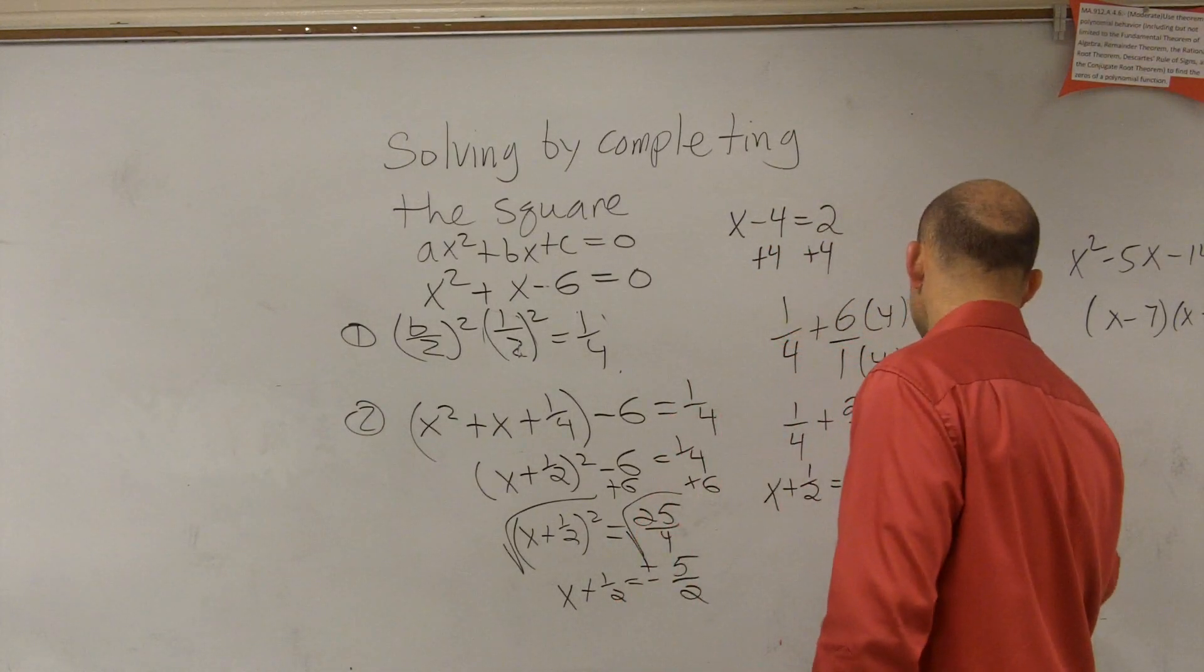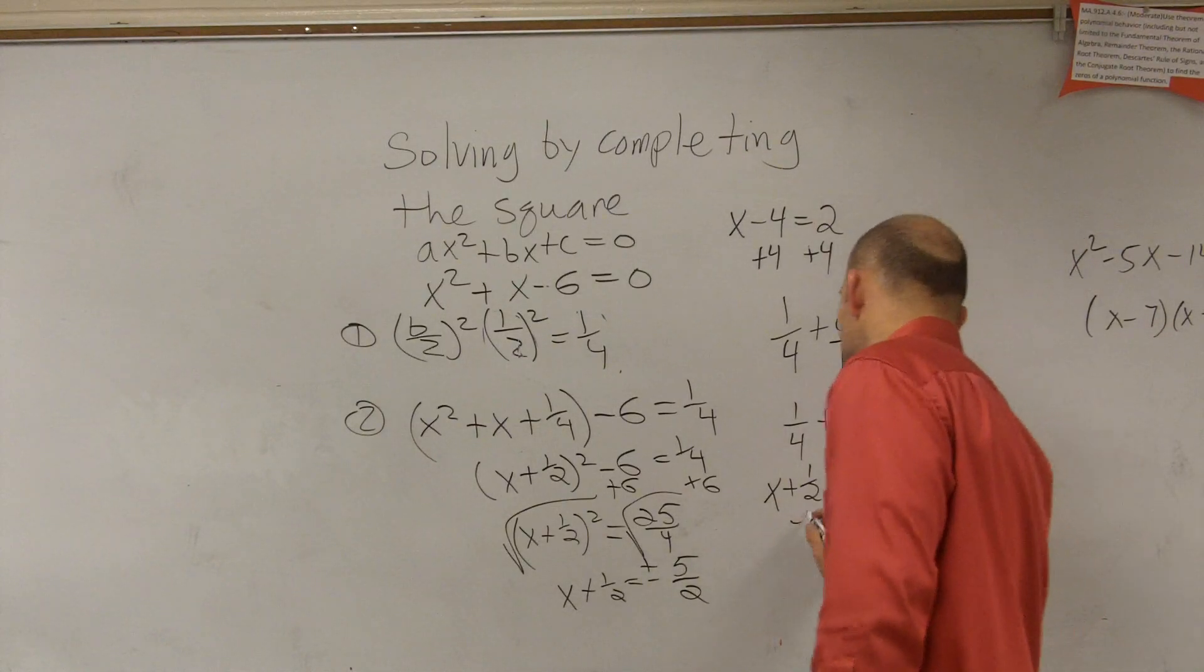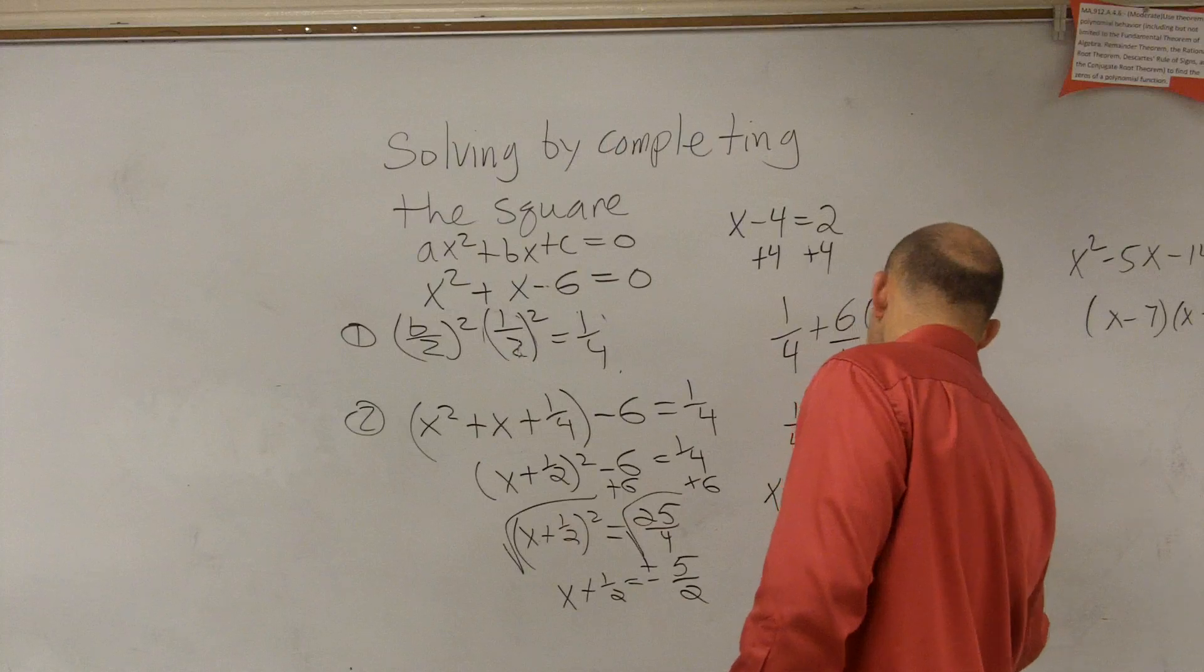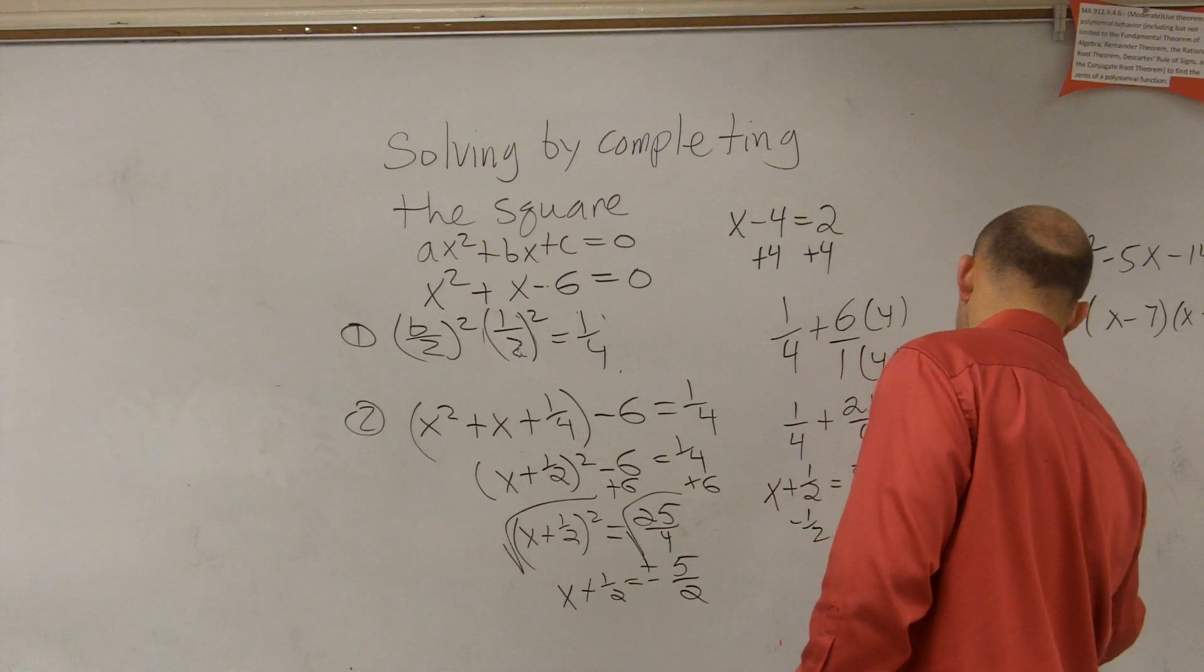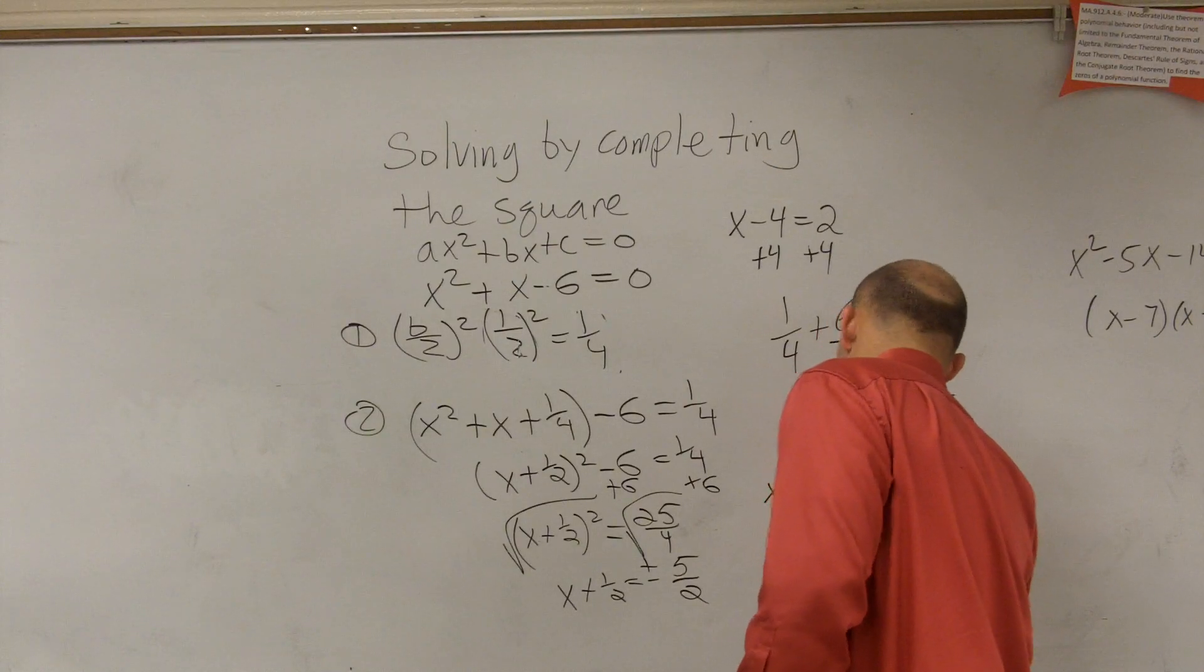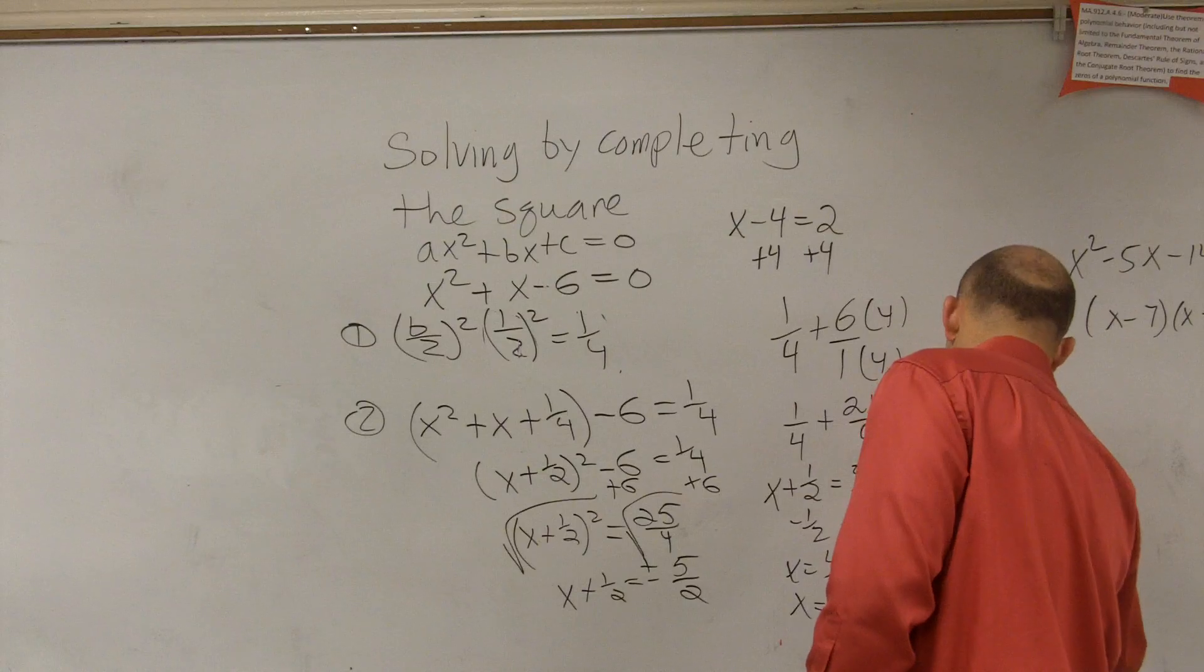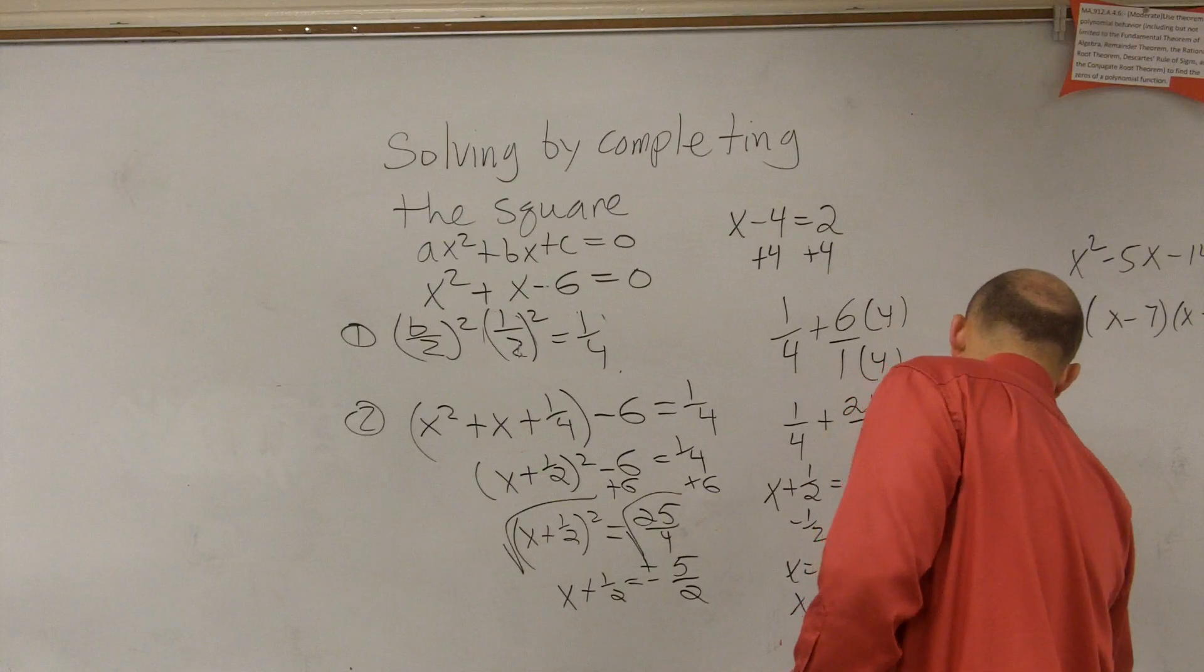So therefore, since it equals 5 over 2, you can rewrite it as x plus 1 half equals 5 over 2 and x plus 1 half equals negative 5 over 2. So you solve for x minus 1 half on both sides. And you get x equals 4 divided by 2, which means x equals 2. And then here, you get x equals negative 6 over 2, which means x equals negative 3.